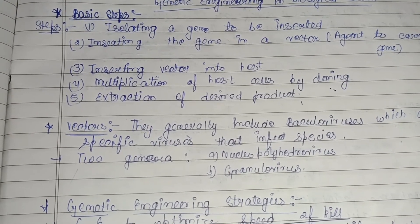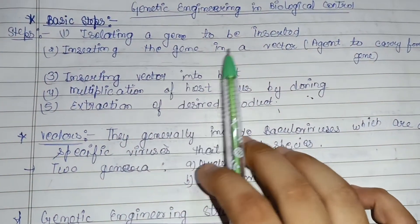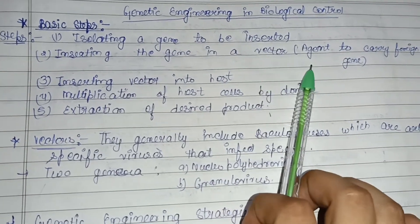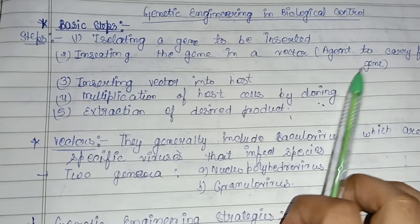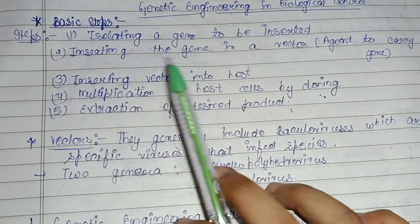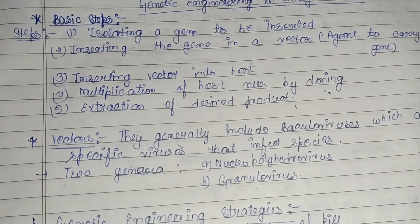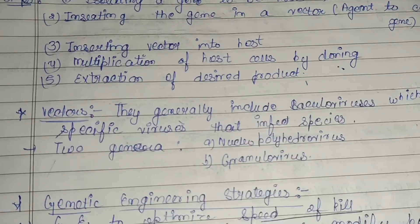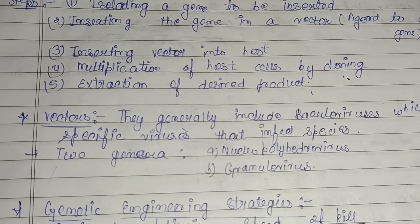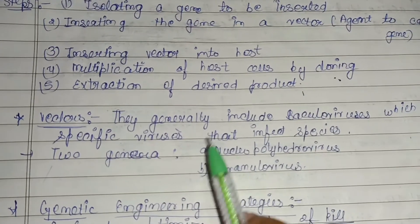The basic steps used in the genetic engineering method — using bacteria as an example — are: first, isolating the gene to be inserted; second, inserting the gene into a vector, which is an agent that carries the foreign gene (plasmid is commonly used); third, inserting the vector into the host where it multiplies; fourth, multiplication of host cells by cloning — making exact genetic copies of genes, cells, tissues, or even whole organisms; and finally, extraction of the desired product.